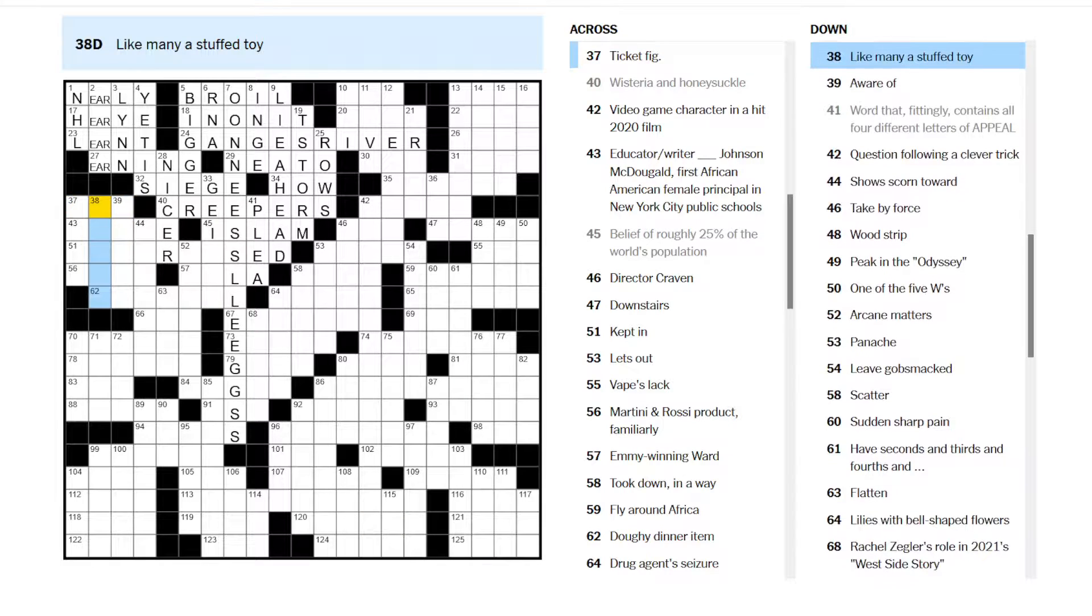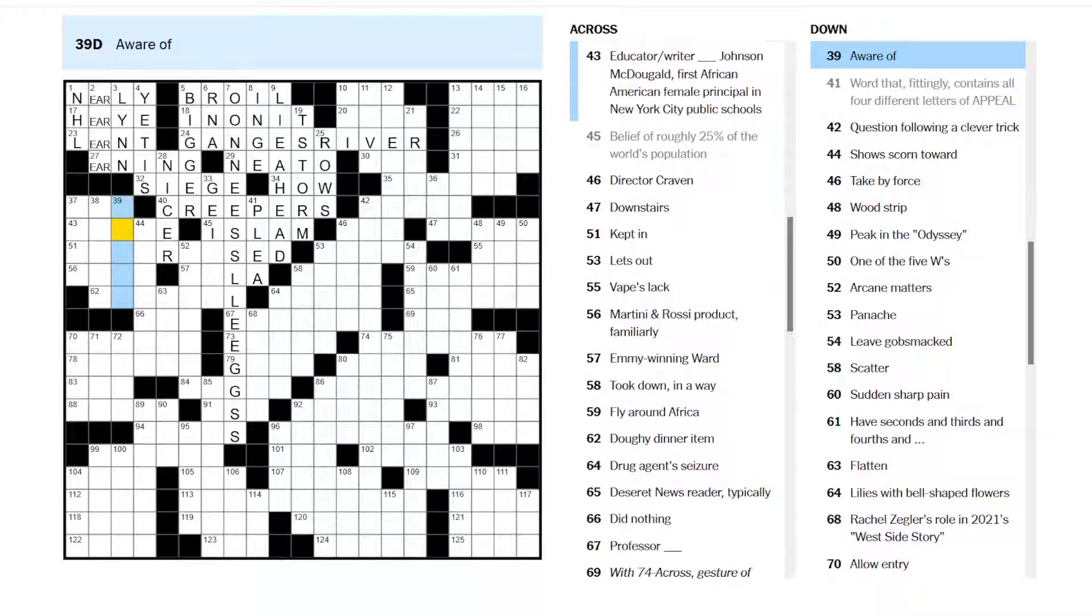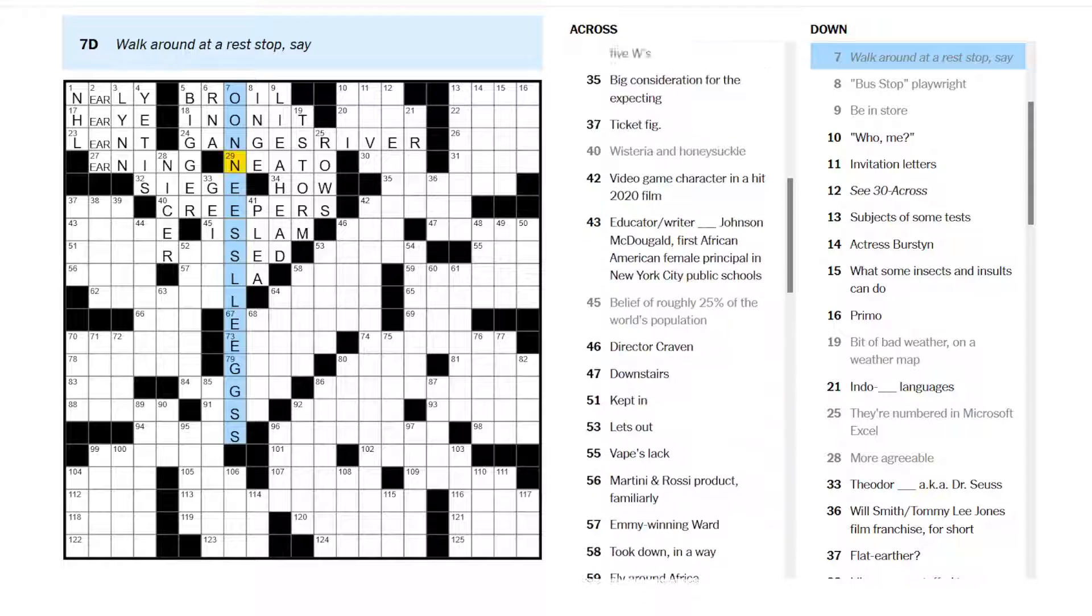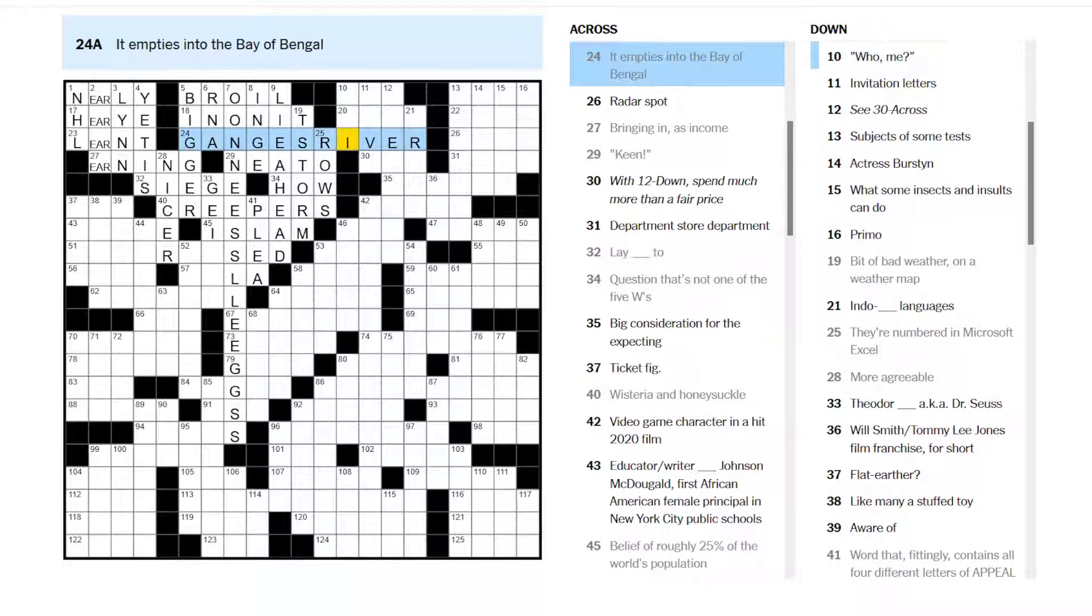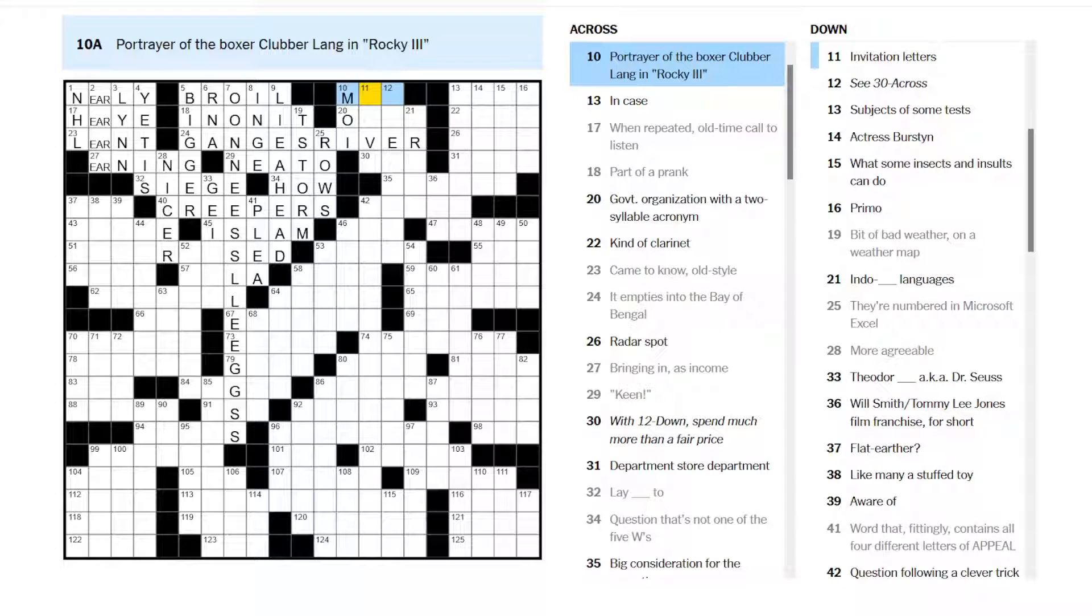Ticket figure. Well, there's a lot. Could be a lot of things. Like many, a stuffed toy. Maybe a bear? Aware of. Onto. Upon. Known, maybe? Kept in. Well, let's keep going up here, maybe. Who, me? Moi? Portrayer of the Boxer Clubber Lang in Rocky III. Clubber Lang, right. Bunk. That was Mr. T. Okay.